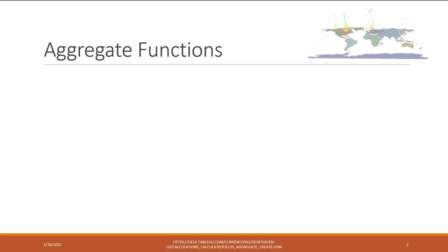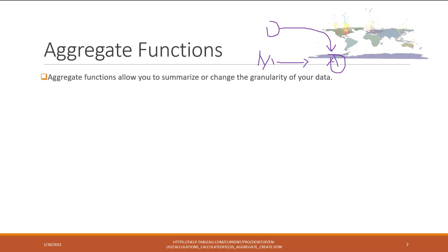Let's talk about aggregation functions. In Tableau, all the measures by default are aggregated, and all the dimensions will determine the granularity of those aggregations. That's the difference between measures and dimensions. Aggregation functions allow us to summarize or change the granularity of our data.